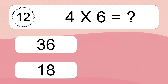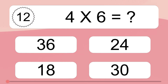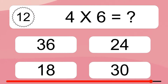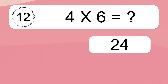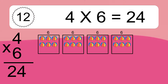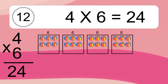4 times 6 equals what? 4 times 6 equals 24. We have 4 boxes and each box has 6 colorful balls inside. If you count all the balls in all the boxes together, you will have 4 times 6 balls. This equals 24 balls.